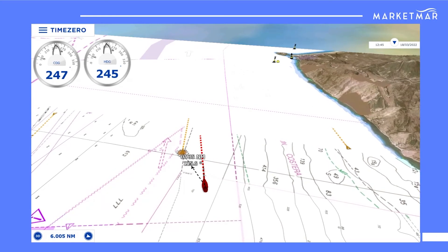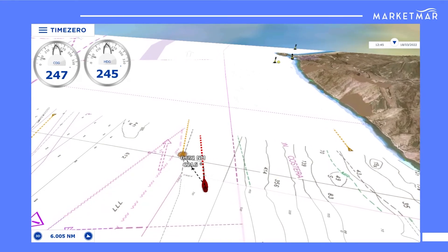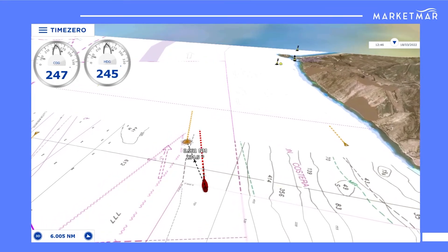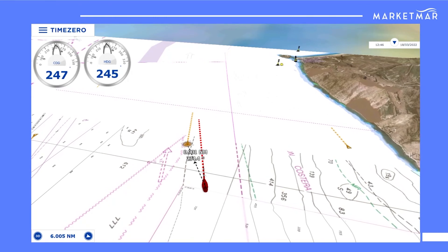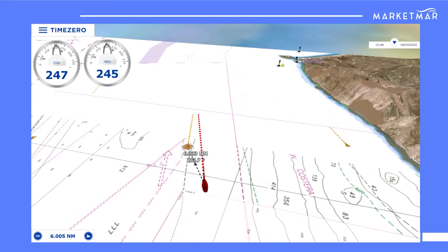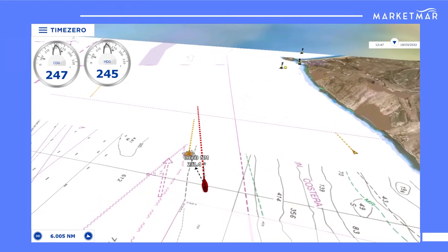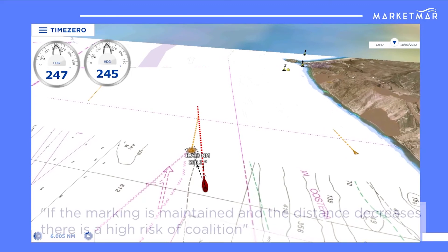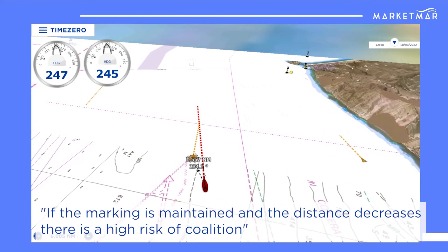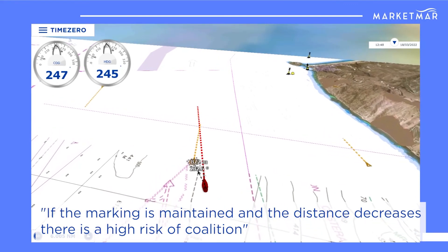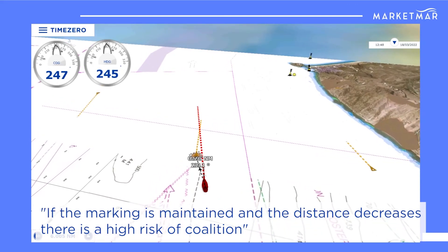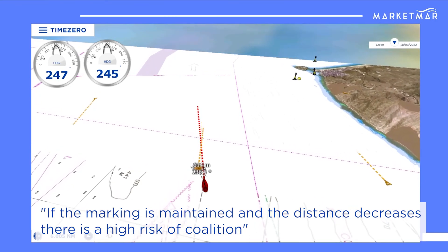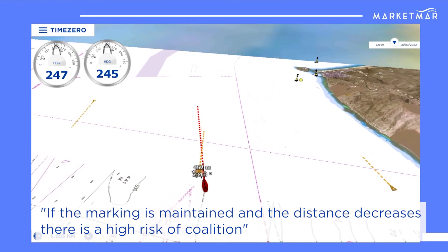Determining if there is a risk of collision: if, when taking several bearings over a period of time, the bearing varies and the distance between the two vessels decreases, there is no real risk of collision. However, if the bearing is maintained and the distance decreases, there is a risk of collision.